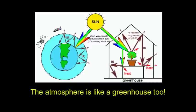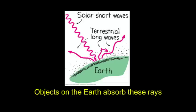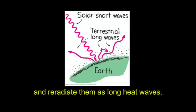The atmosphere is like a greenhouse too. It lets the short solar rays pass through. Objects on the earth absorb these rays and re-radiate them as long waves.